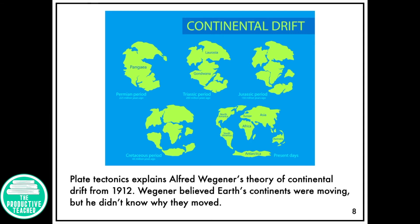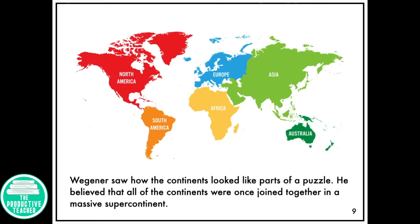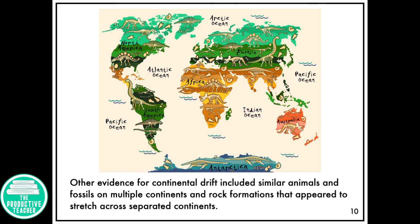Wegener believed Earth's continents were moving, but he didn't know why they moved. He saw how the continents looked like the parts of a puzzle and believed that all of the continents were once joined together in a massive supercontinent. Other evidence for continental drift included similar animals and fossils on multiple continents and rock formations that appeared to stretch across separated continents.